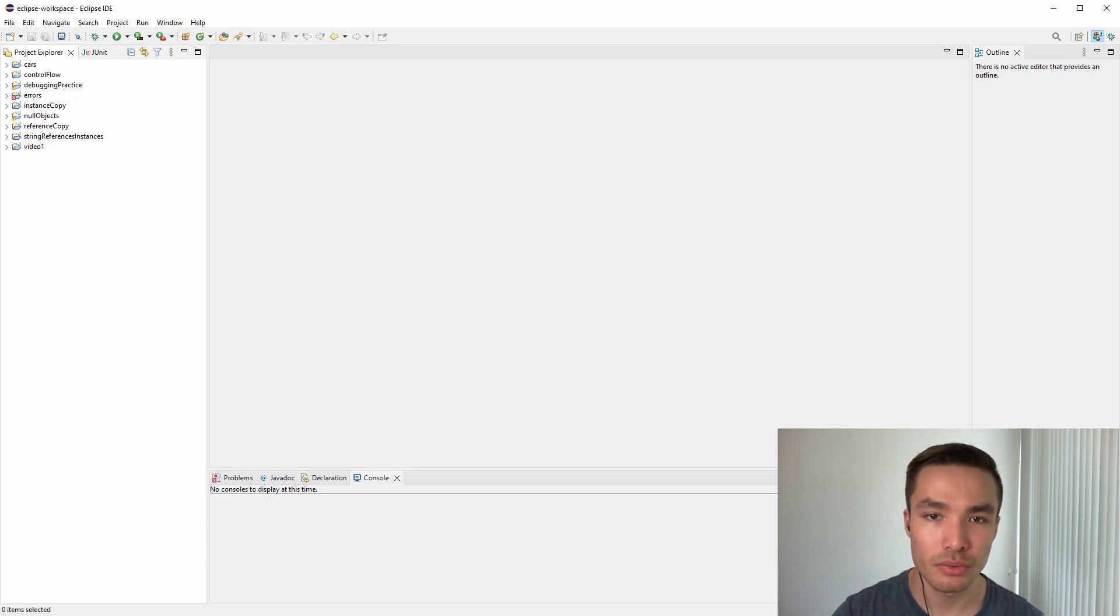First we'll talk about test-driven development and why it is a powerful concept for programmers. Then we'll focus on understanding what a failure trace is and the type of feedback JUnit offers. Finally, we'll take a look at the assertion functions available to us in JUnit, which is basically the syntax we need to use when writing our tests.